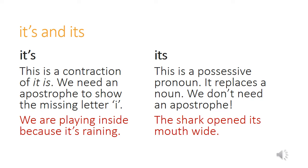So it's easy. Each time you write the word its, just ask yourself: can it be replaced by it is? If the answer is yes, then you need an apostrophe. Otherwise, you don't need one.